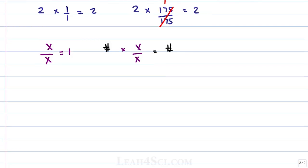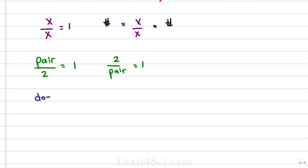It should feel very simple up to this point, but I want to make sure it's crystal clear. What if we change the fraction so that the numerator looks slightly different from the denominator, but they still mean the same thing? It still equals 1. A pair over 2 equals 1 because there are 2 in a pair. If I flip it, 2 over a pair is still 2 over 2, which equals 1. A dozen divided by 12 equals 1 because a dozen is 12, and flipped, 12 over a dozen is again 12 over 12, which equals 1.